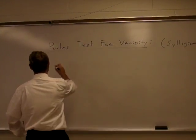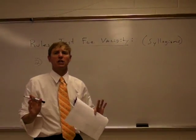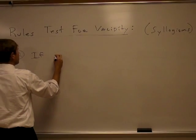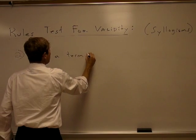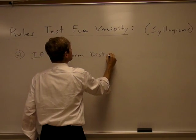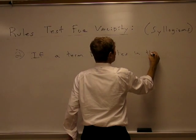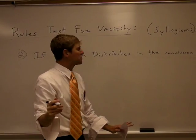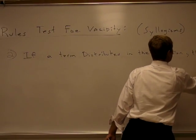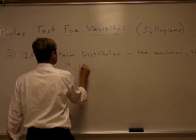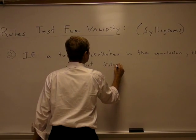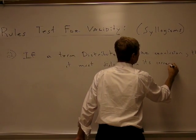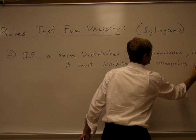This is the second of the two rules dealing with distribution. If a term distributes in the conclusion — or put another way, if it's a distributed term in the conclusion — then it must distribute in its corresponding premise.